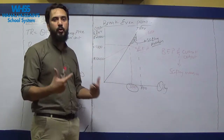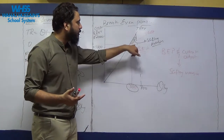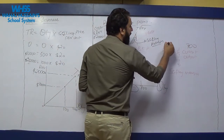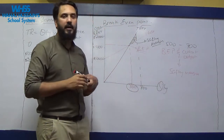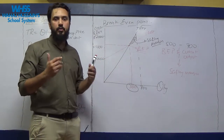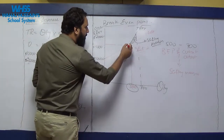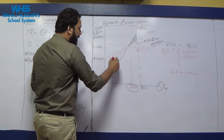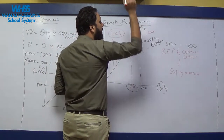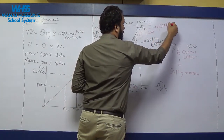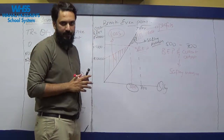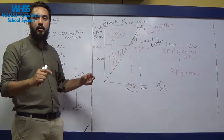The business is safe by 200 units because they are producing 200 more units than the break-even point, and this represents their profit — this is the safety margin. Below the break-even point, this entire area represents losses. From the break-even point onwards, this area represents profits. And from the break-even point to the current production level, that gap is the safety margin.